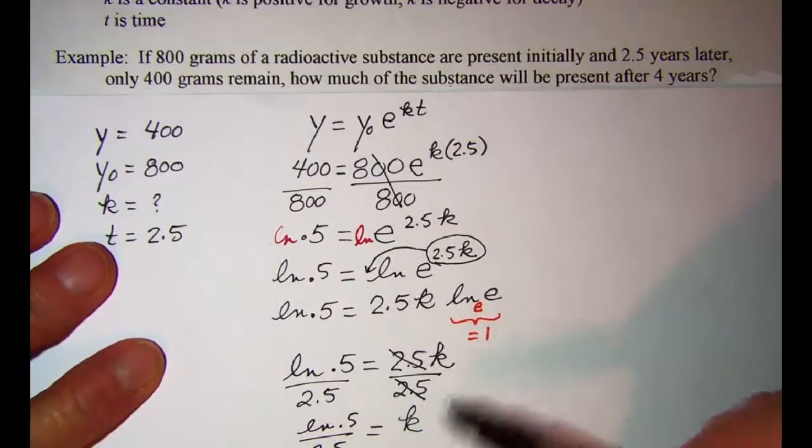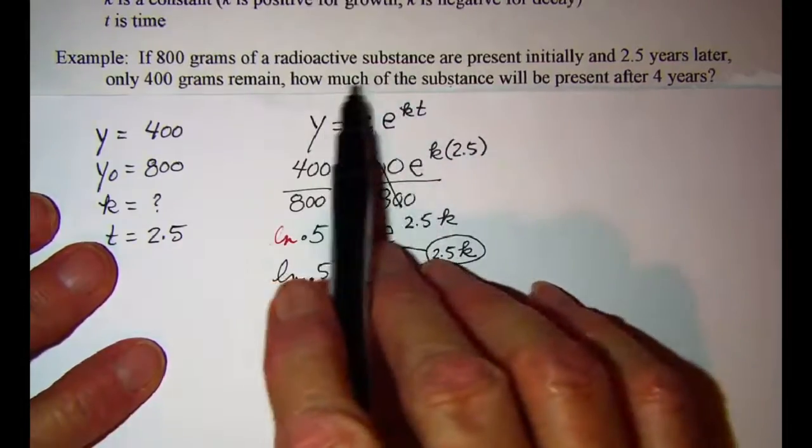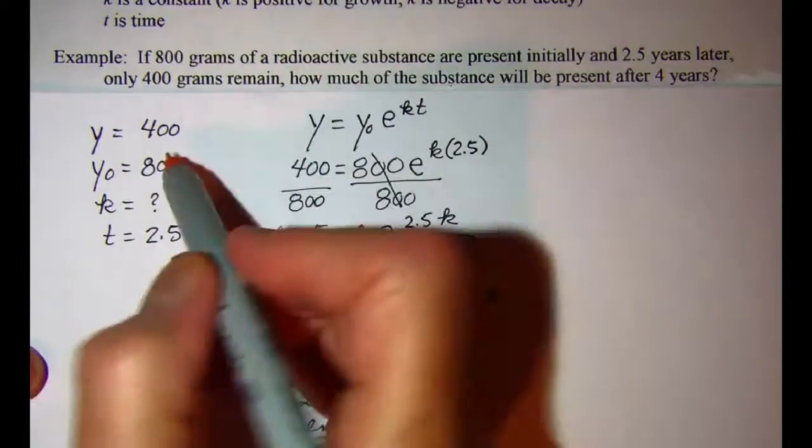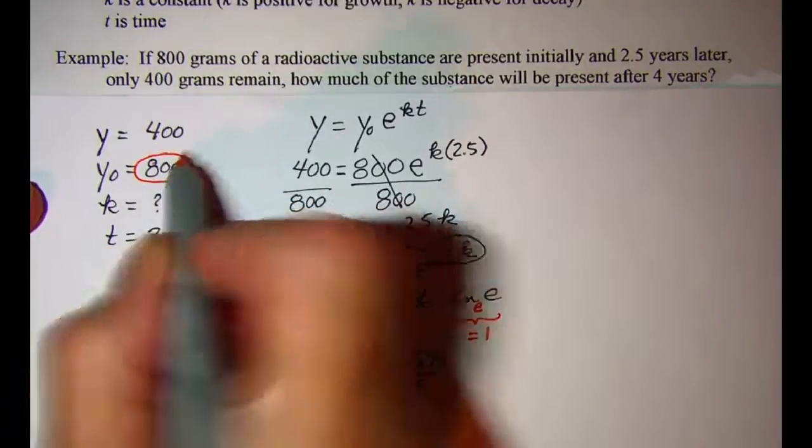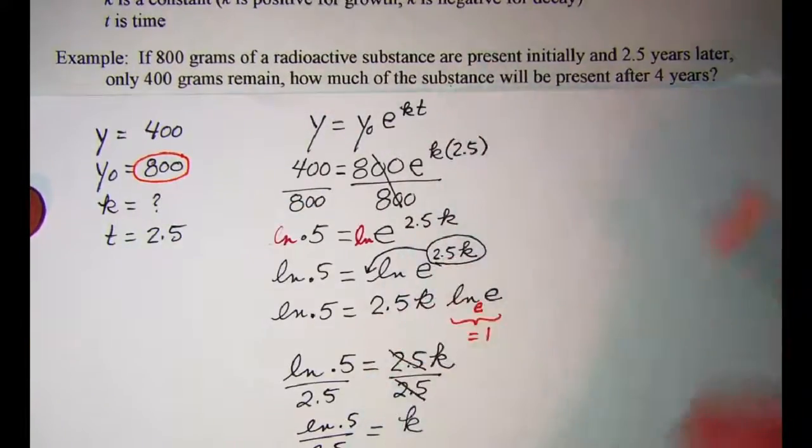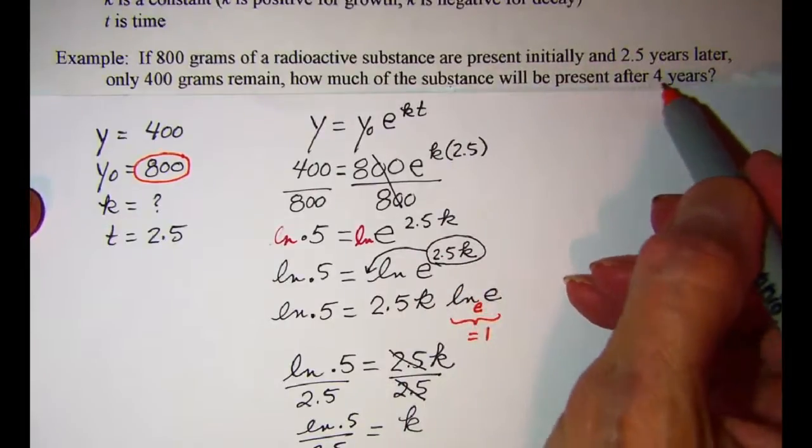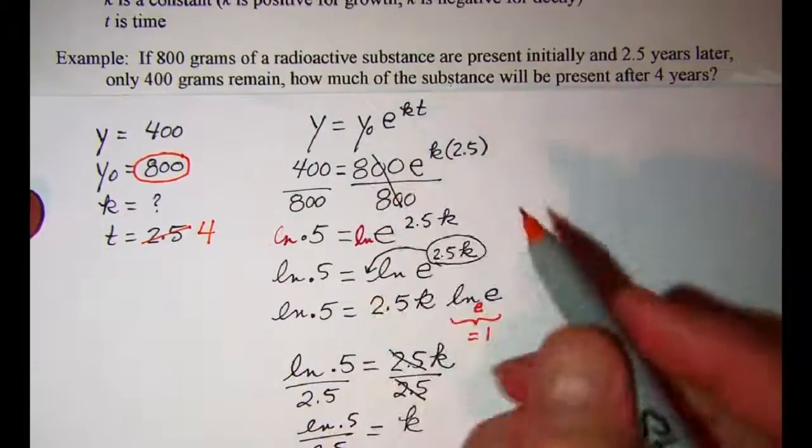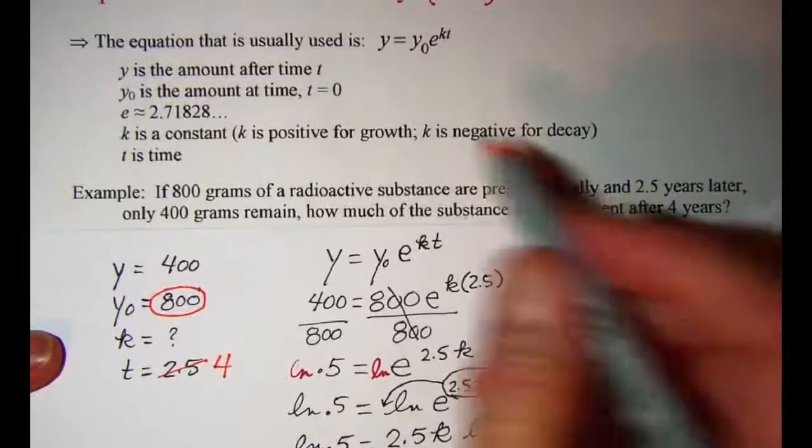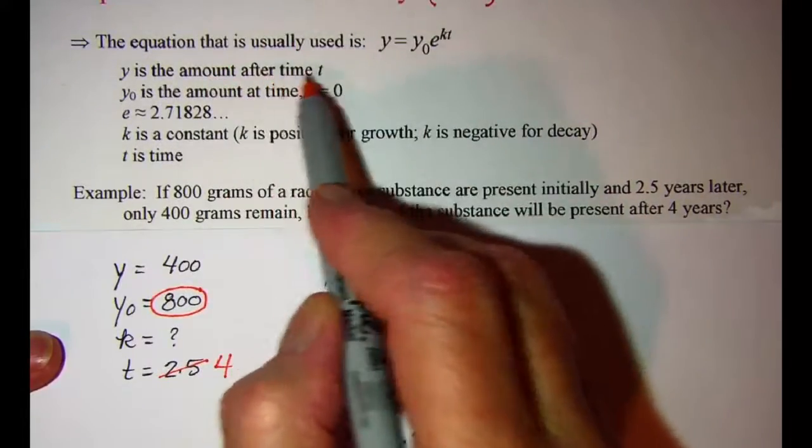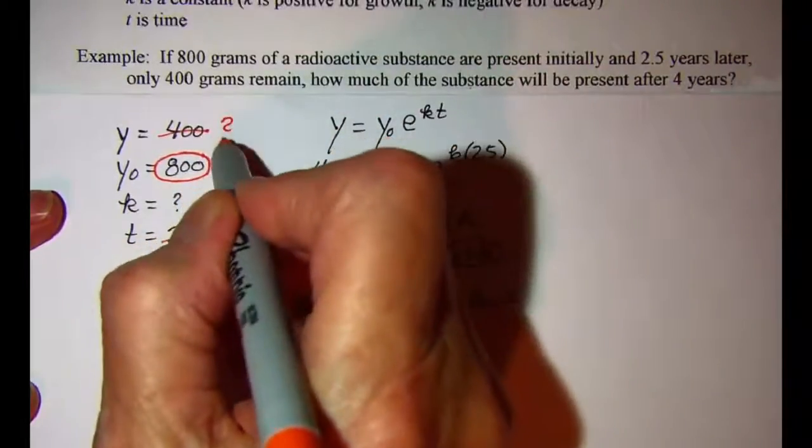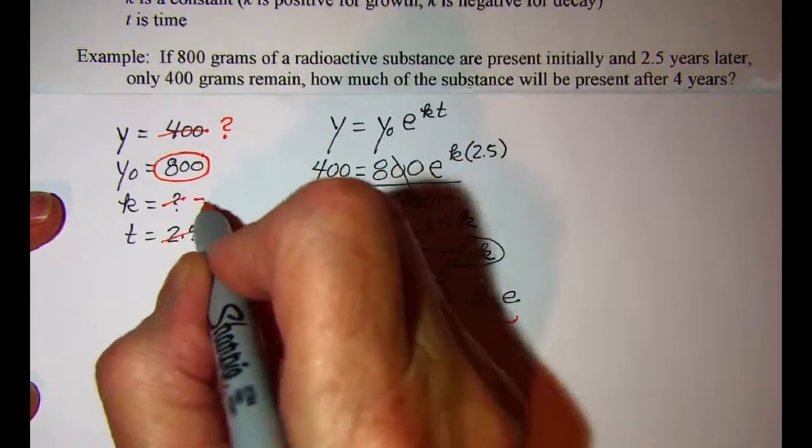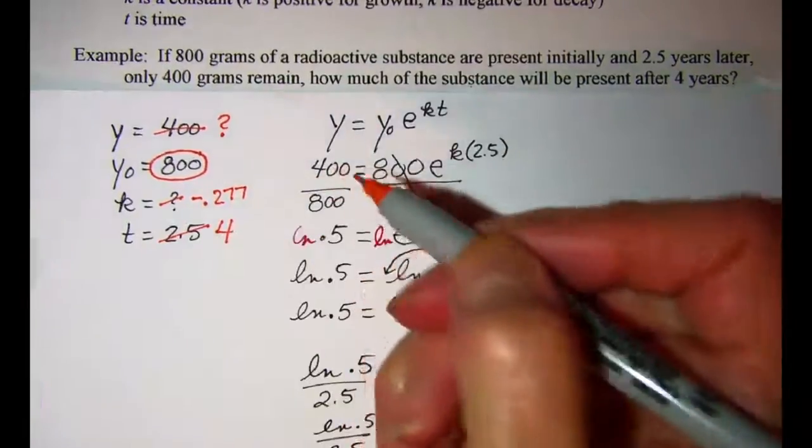We now know the value of k and we want to find out how much of this substance will be present after 4 years. So our initial value we're going to continue with that but now our amount we want after 4 years. So our time is now going to be 4 years and we're looking for that amount after 4 years. So we're looking for y this time. So this is going to be our thing that we're looking for. And then k we now know is negative 0.277 stored in the calculator.